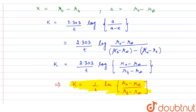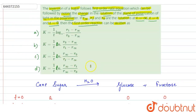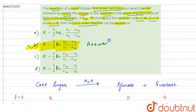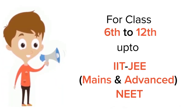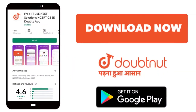So option B is the correct answer. Thank you. For class 6 to 12, IIT-JEE and NEET level, trusted by more than 5 crore students — download Doubtnut today.